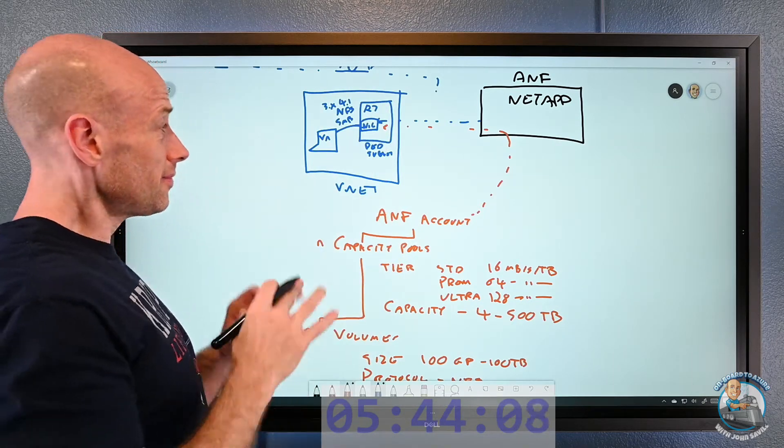I have an account and lots of accounts within my subscription. Within an account, I have a number of capacity pools. Within each capacity pool, I have a number of volumes. It's the volume I'm actually going to use. It's projected into there. I create my virtual machines and I connect using NFS or SMB. If it's NFS, it's version 3.x or 4.1. If it's SMB, it's going to be 2.x or 3.x. Those are the versions I'm going to have for that communication.